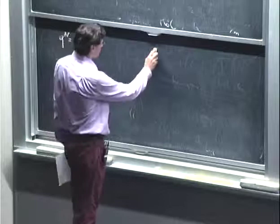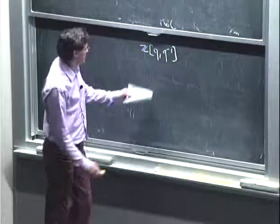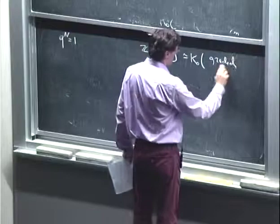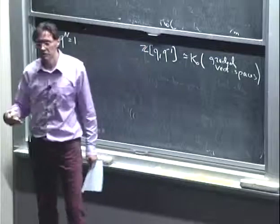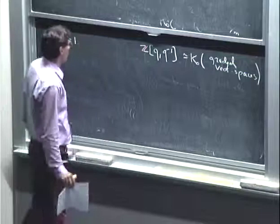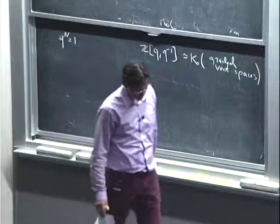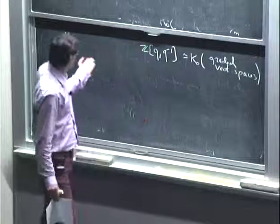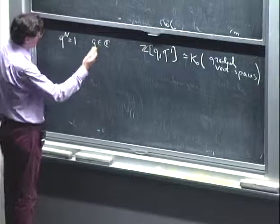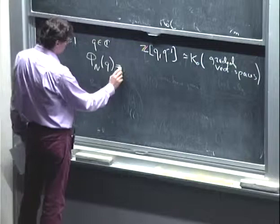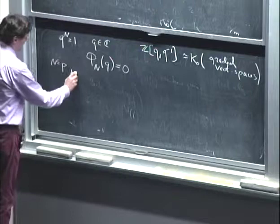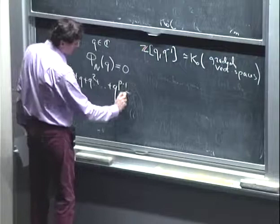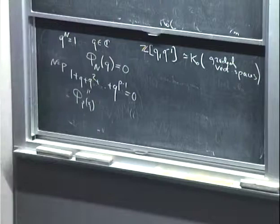Before, we worked with the ring Z[q, q^{−1}], which is the Grothendieck ring of the category of graded vector spaces, where the grading shift corresponds to multiplication by q. But now we want to add the condition that q^n = 1. The most naive way is to work with cyclically graded spaces, but what we really want is not just q^n = 1 but a more refined relation: the n-th cyclotomic polynomial at q equals 0. For instance, when n is prime p, we want the relation 1 + q + q² + ... + q^{p−1} = 0, i.e., Ψ_p(q) = 0. This is much more refined.